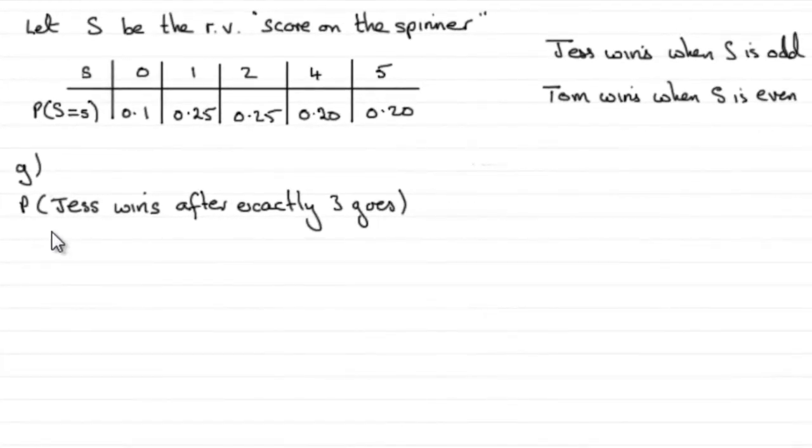Now for this last part, part G, we've got to work out the probability that Jess wins after exactly three goes. Now for Jess to win, he's got to score ten or more.